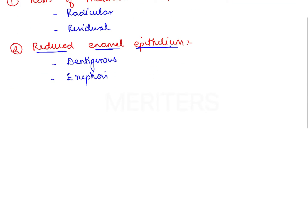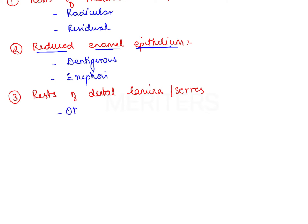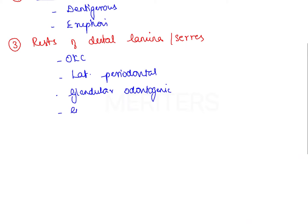The third important category includes odontogenic cysts derived from rests of the dental lamina. It includes five odontogenic cysts: odontogenic keratocyst, lateral periodontal cyst, glandular odontogenic cyst, and two gingival cysts — the gingival cyst of newborns and the gingival cyst of adults.